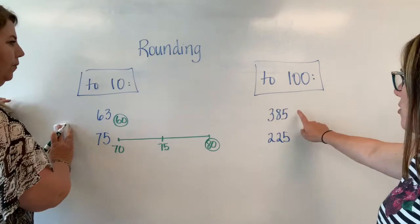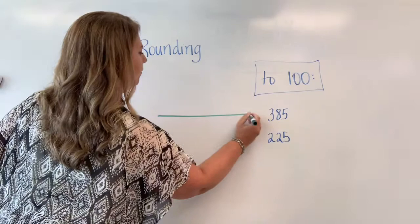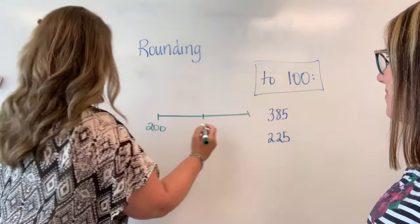All right so we have a couple more. Do you want to try rounding 385 to the nearest hundred? Yes. Okay 385 to the nearest hundred. Okay so you got to think count by one hundreds and I said 385. I gave you one of the hundreds. So I'm going to say 200.